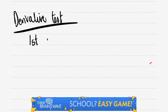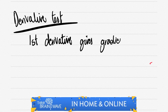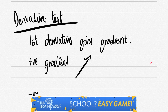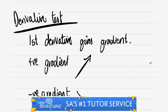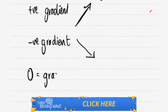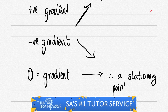Let's look at the derivative test. The first derivative gives you the gradient. If you have a positive gradient it means that the graph or function is going upwards. If you have a negative gradient it means it's going downwards. A zero gradient however means that there is a stationary point, as you can see over here.